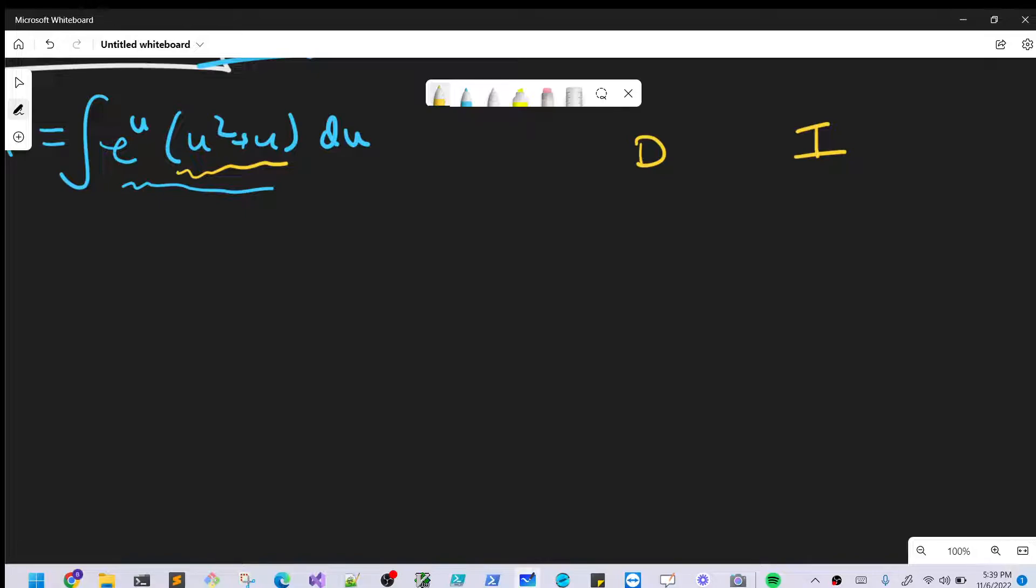it always reduces and eventually reduces to zero. So let's do that. We're going to have our u squared plus u. And to integrate, we'll do our e to the u. This will do plus, minus, plus. I'm not sure how many rows we need.